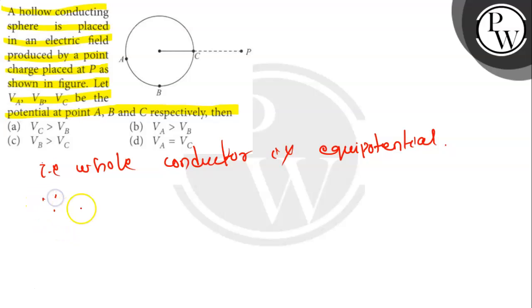VA equals to VB equals to VC. So, here option D is the correct answer. VA equals to VC.